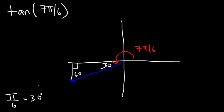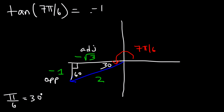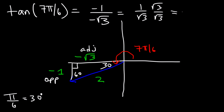Across from the 30 is 1, across from the 60 is √3, across from the 90 is 2. In quadrant 3, both x and y are negative. Tangent is opposite over adjacent, so it's negative 1 divided by negative √3, which equals 1/√3. Rationalizing gives us tangent of 7π/6 equals √3 divided by 3.